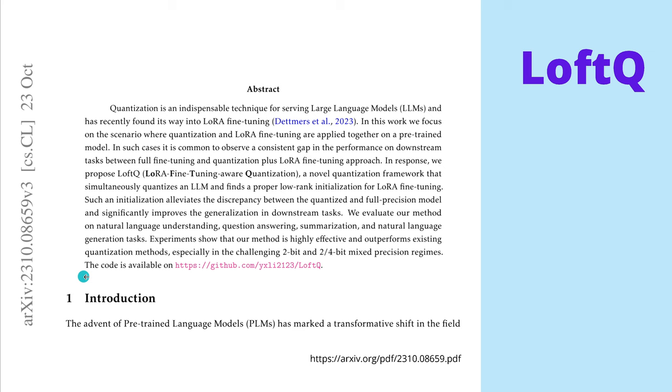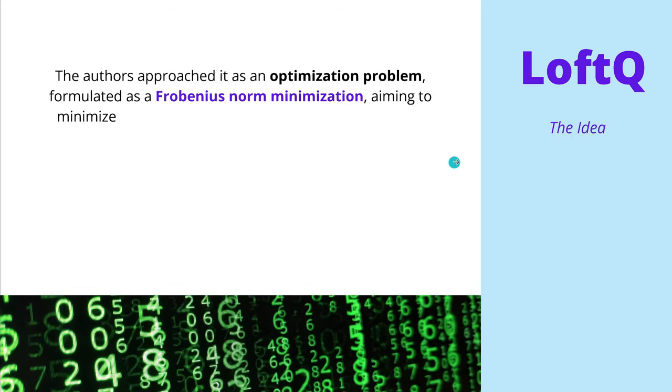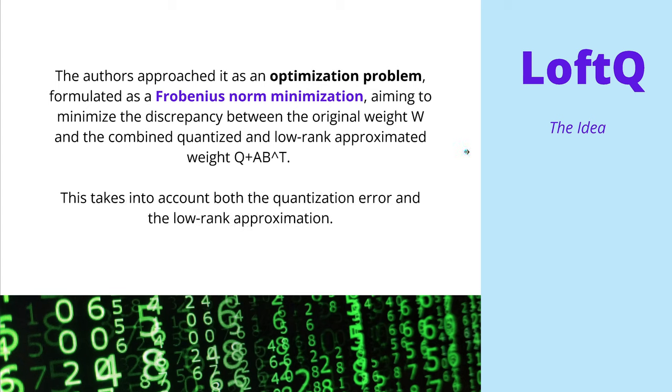Now if you want to see the code, you jump directly here to the GitHub, but let's have a look what is the main idea behind this. Now the authors approached this as an optimization problem, and they formulated it as a Frobenius norm minimization, aiming to minimize the discrepancy between the original weight tensor of our pre-trained LLM or VLM, and now the combined quantized and low rank approximation weight.